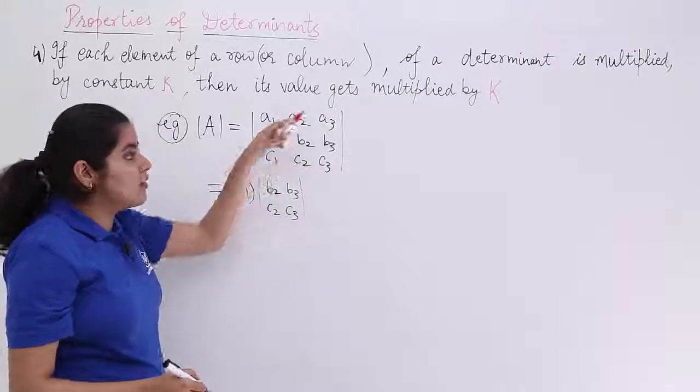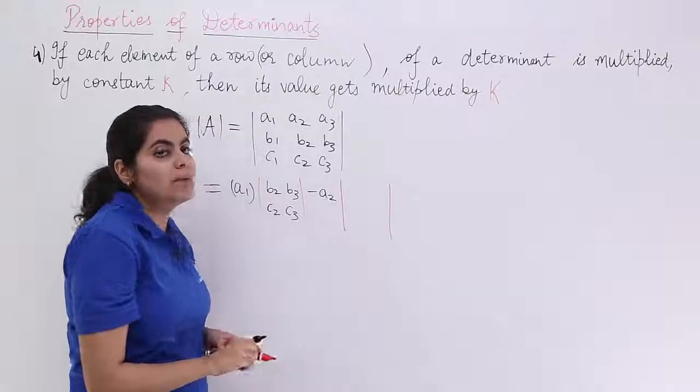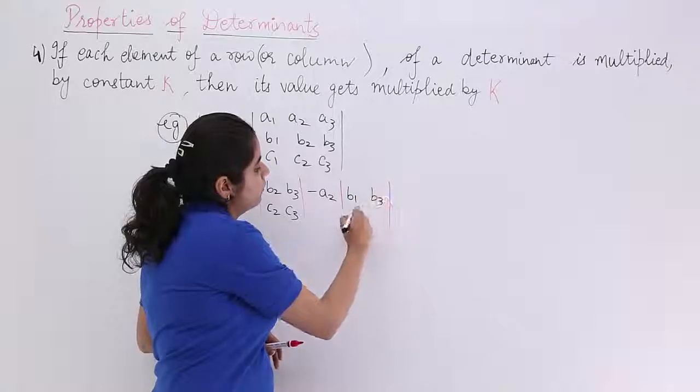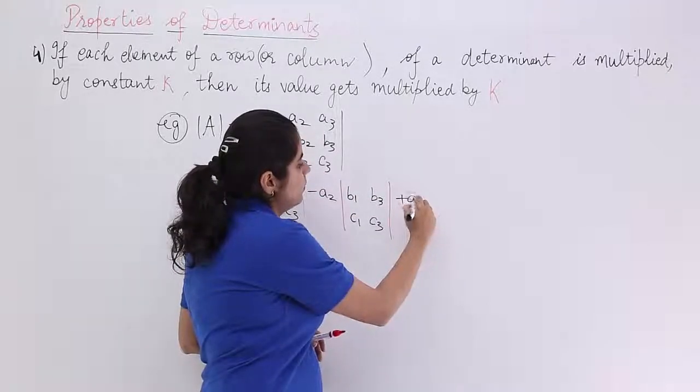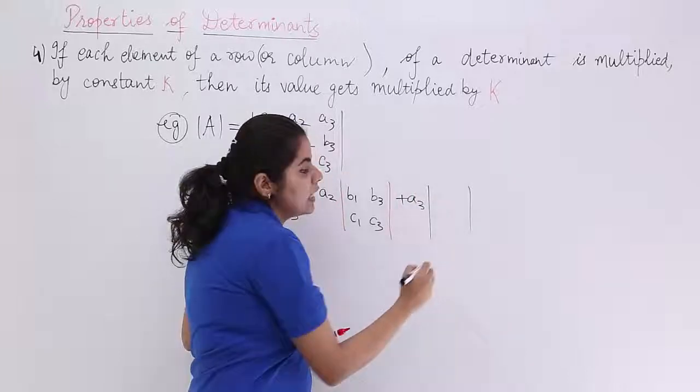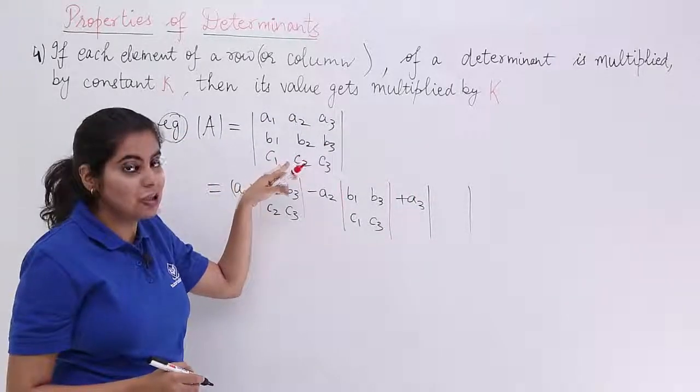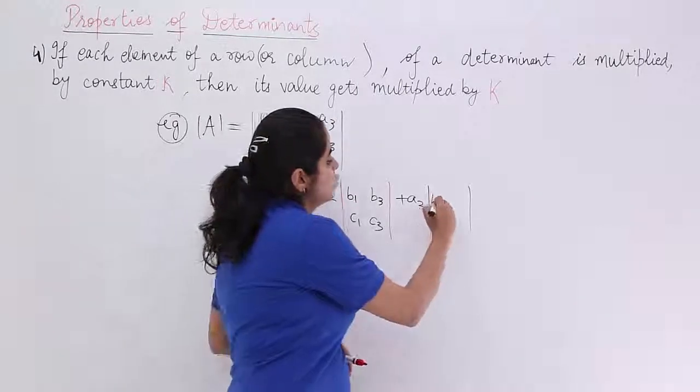Again, what we have is A2 here. So, it is minus A2. Inside again, you have a sub-determinant and it is what? B1, B3, C1, C3. And last but not the least, I have plus A3. And inside also, I have a sub-determinant. Ignoring things such as third row, third column, first row, I have B1, B2, C1, C2.